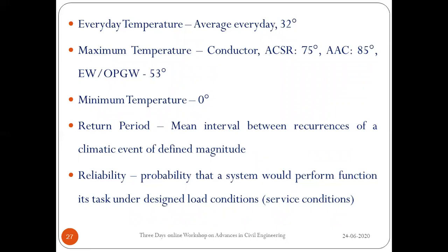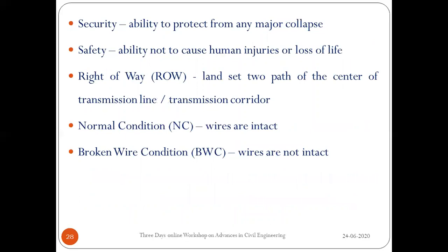Towers are designed to resist certain loads. Return period is the mean interval between recurrences of a climatic event of defined magnitude such as a cyclone. Reliability is defined as the probability that the system will perform its task under designed load conditions — this represents normal service conditions without cyclones or extreme temperatures.